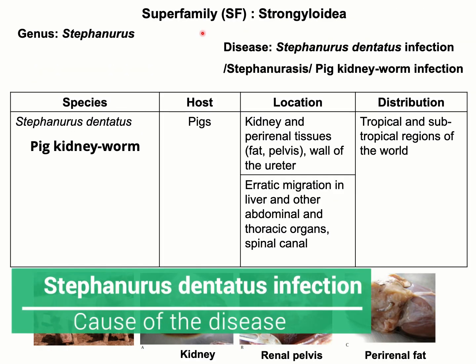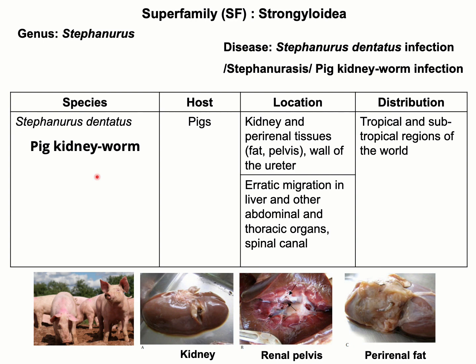Under superfamily Strongyloidea, genus Stefanurus — pigs are infected with many gastrointestinal parasites such as Ascaris, Strongyloides, Strongylus, Oesophagostomum dentatum, venulosum, Metastrongylus apri, etc. One of the important parasites of pig is Stefanurus dentatus. The location of this parasite is in the kidney, perinephric tissues, and in the wall of the ureter. Due to its predilection site in the kidney it is also known as pig kidney worm. The larval stages may migrate to the liver and many different abdominal and thoracic organs.